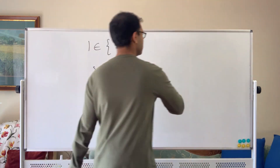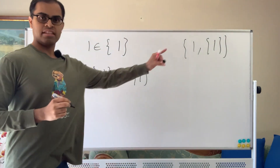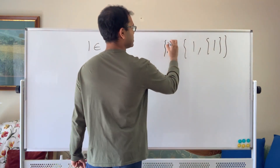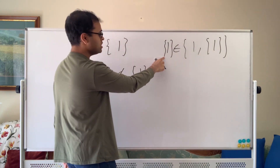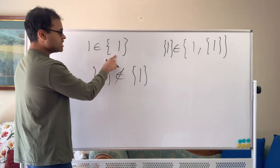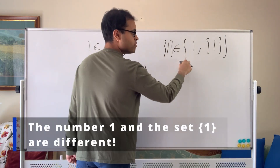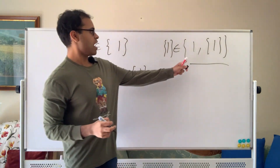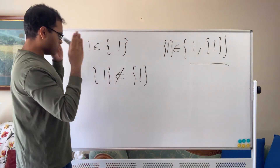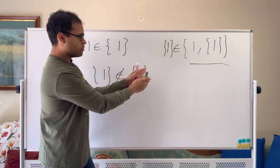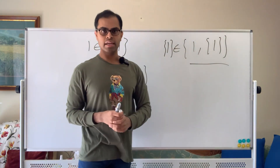If I made a new set like {1, {1}}, then the number 1 is a member of this set, and the set {1} — which is different from the number 1 — is also a member of this bigger set. To be a member of something, it literally has to be included in the list. That's all there is to it.